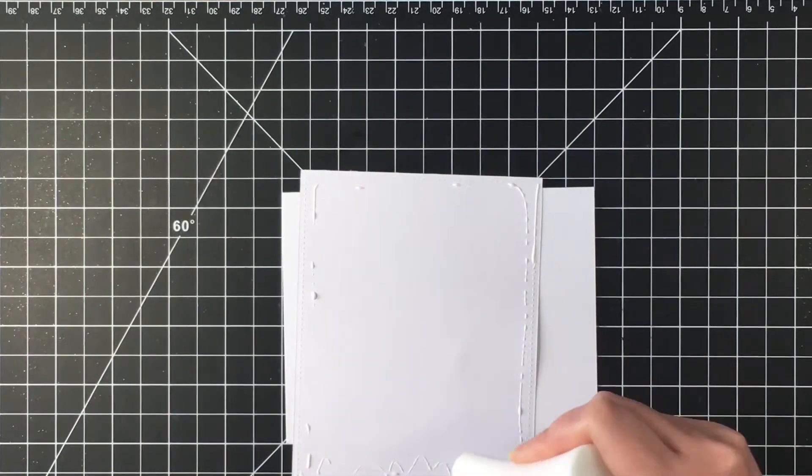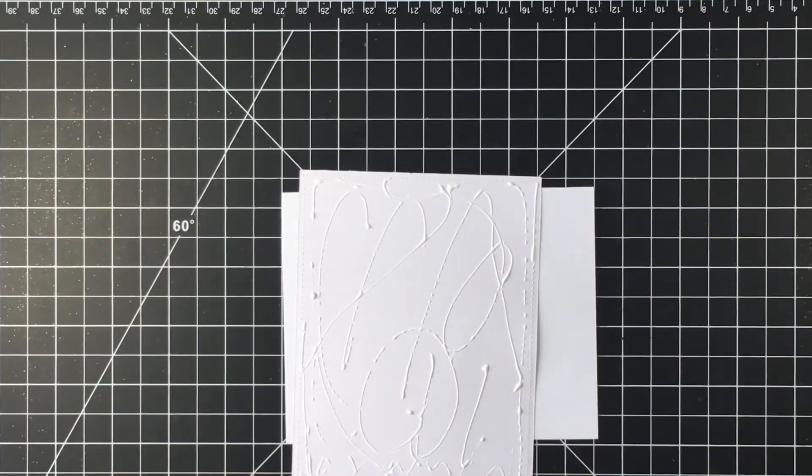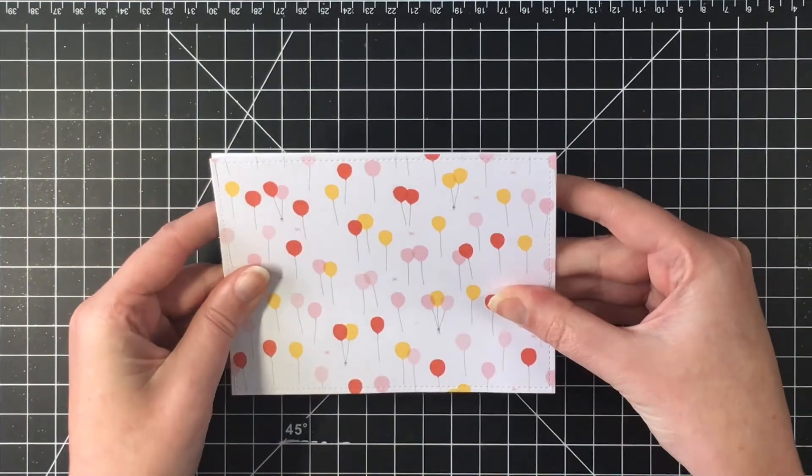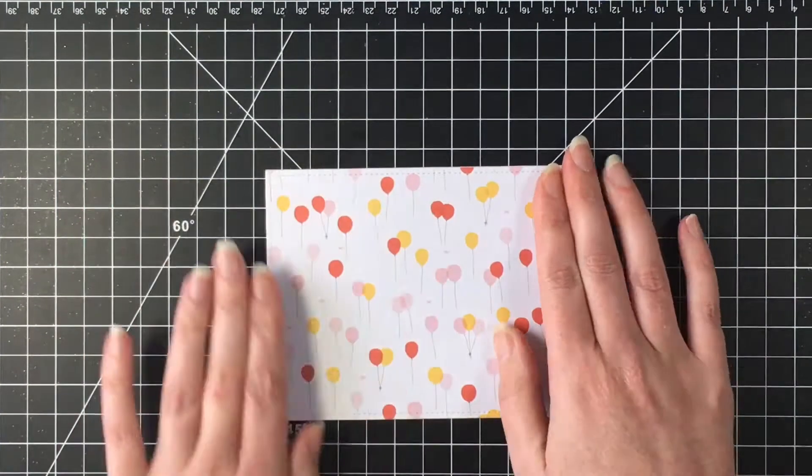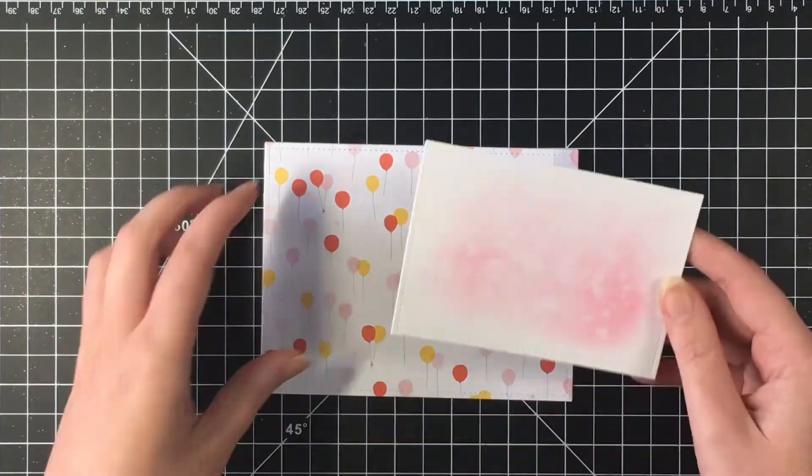So here's the paper that I'm using. It's a bunch of balloons. So I'm just using my Nuvo adhesive, liquid adhesive. And I'm going to put that down onto the card base. I thought this patterned paper was perfect for the feel that I was going for, seeing as it's a birthday card.